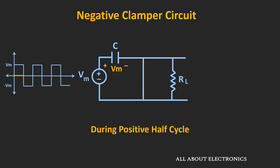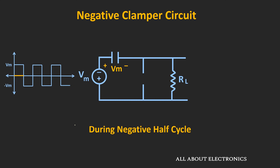During the negative half cycle, the polarity of the input voltage will get reversed. If you observe, the voltage which is appearing across the diode is equal to minus 2Vm — that means the summation of these two voltages. Due to that, this diode will get reverse biased and we can replace it by an open circuit. So during this negative half cycle, the output voltage Vout will be equal to minus Vm minus Vm, that is equal to minus 2Vm. During the negative half cycle, the output waveform will look like this.